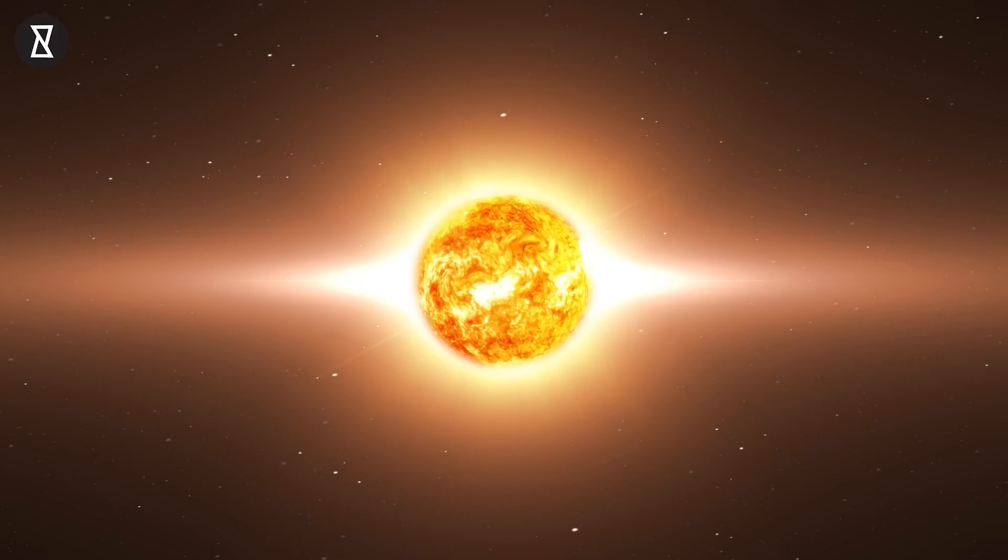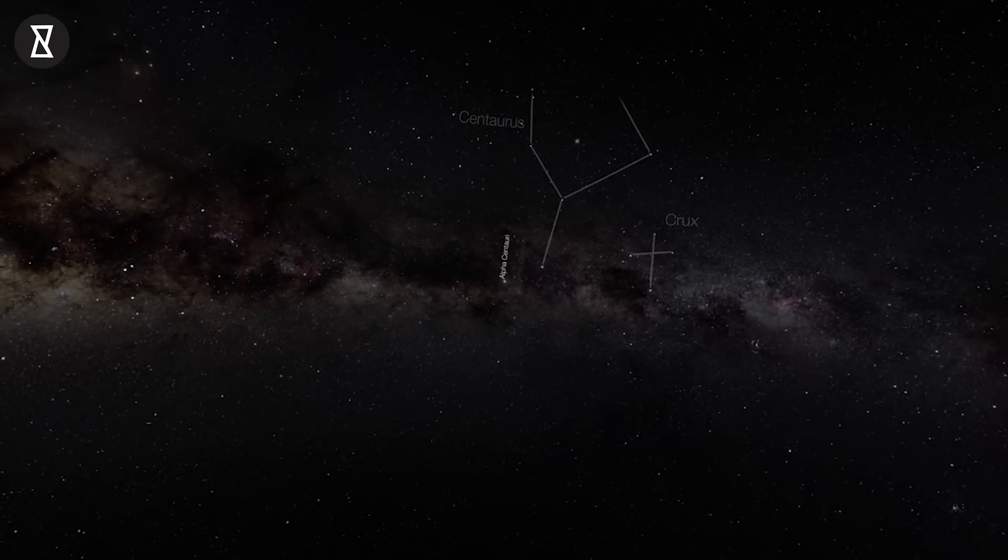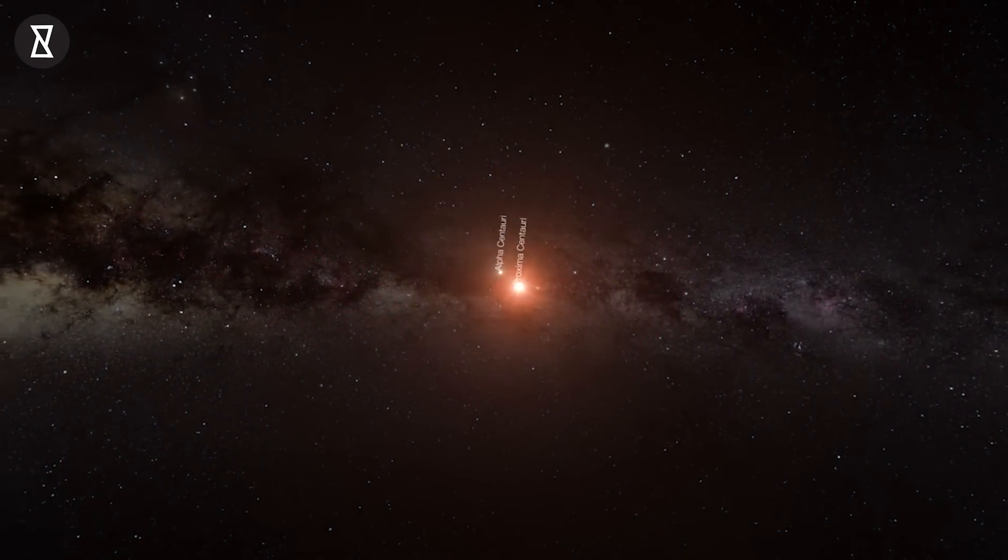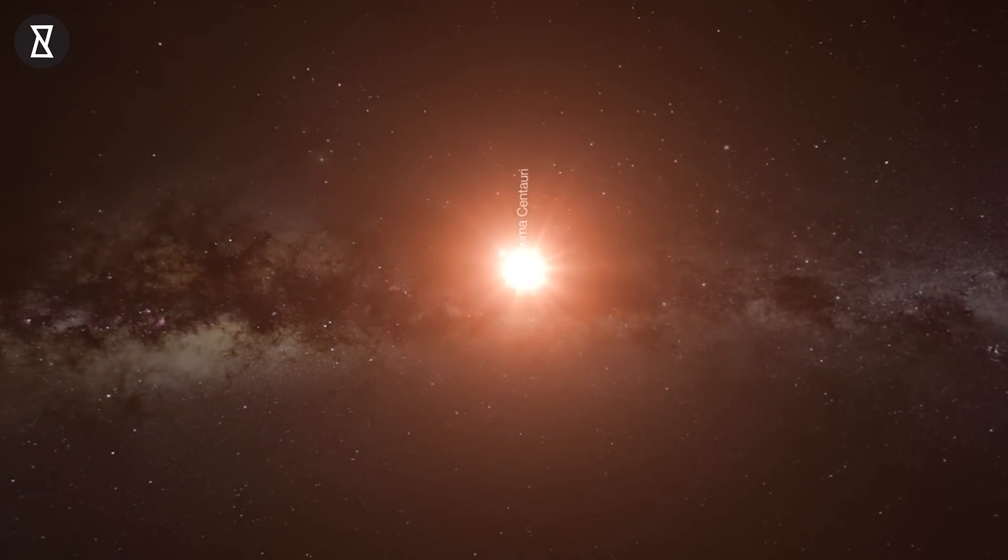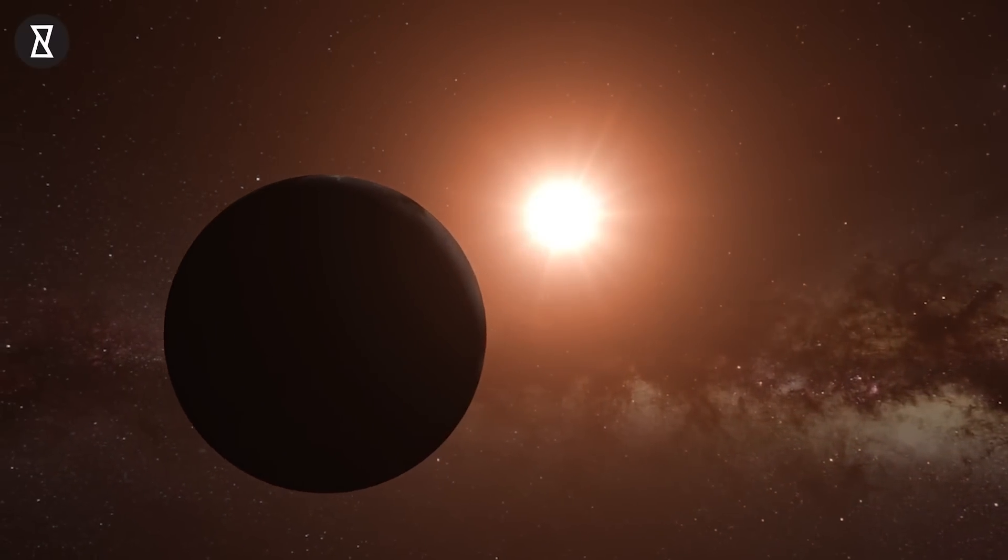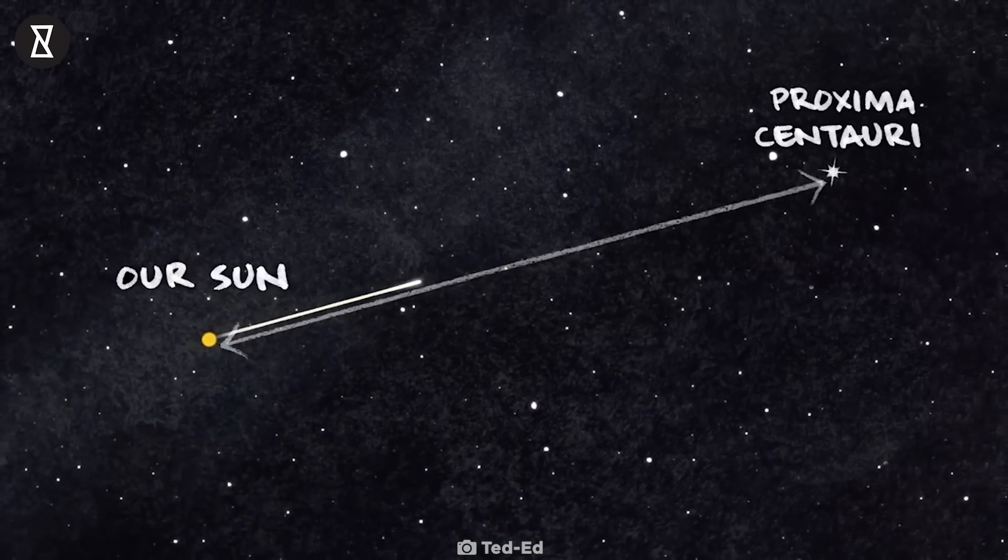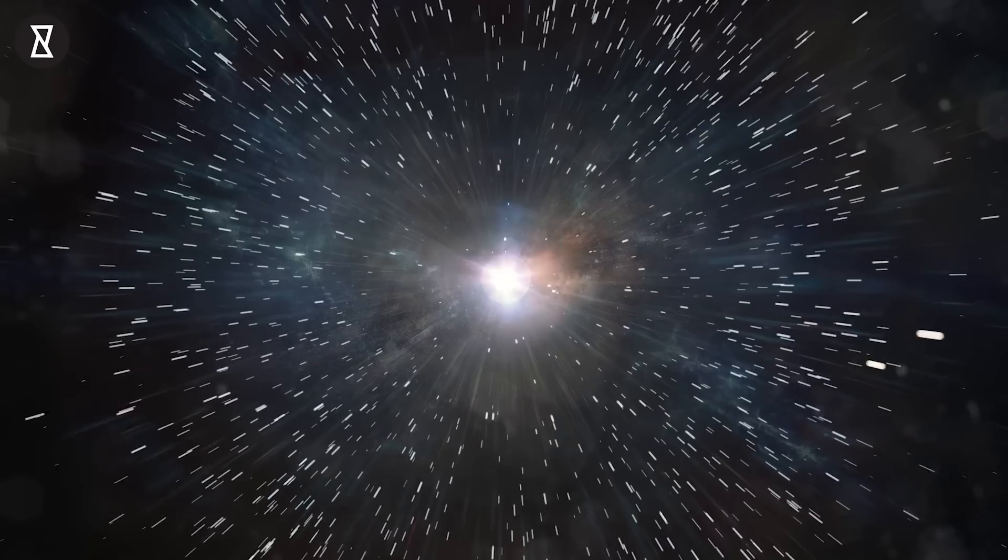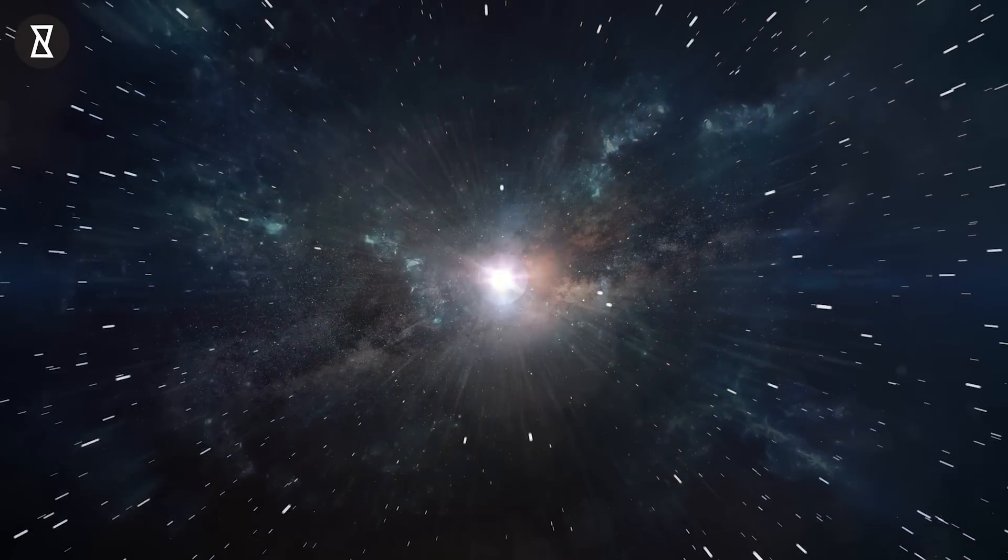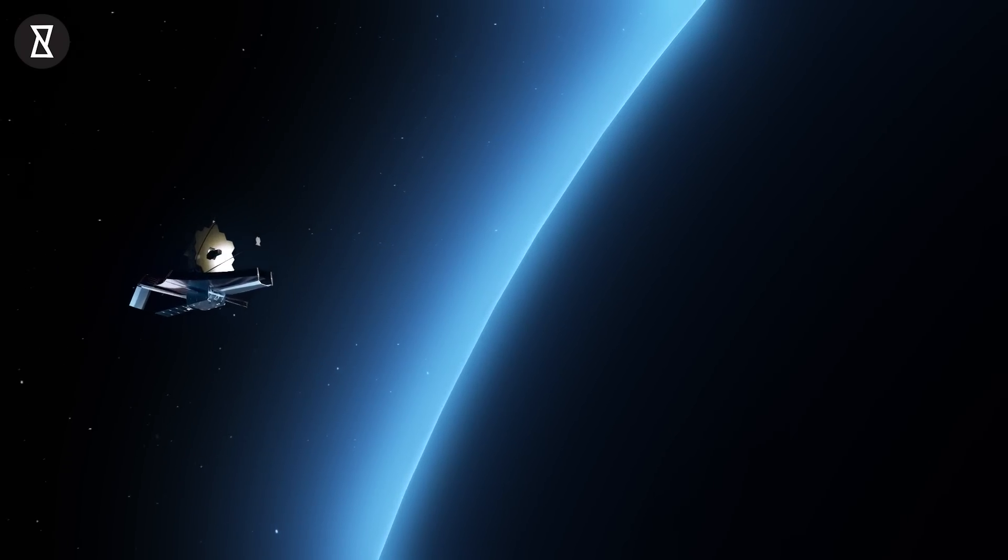Light from Proxima Centauri, which is 40 trillion 208 billion kilometers away from Earth, takes approximately 4 years to reach us from across the expanse of space, so we see it as it was 4 years ago. The farther the object from Earth, the more time it takes for light to travel to us. Light from the first stars began their journey billions of years ago, hence Webb will see these stars as they were billions of years ago.